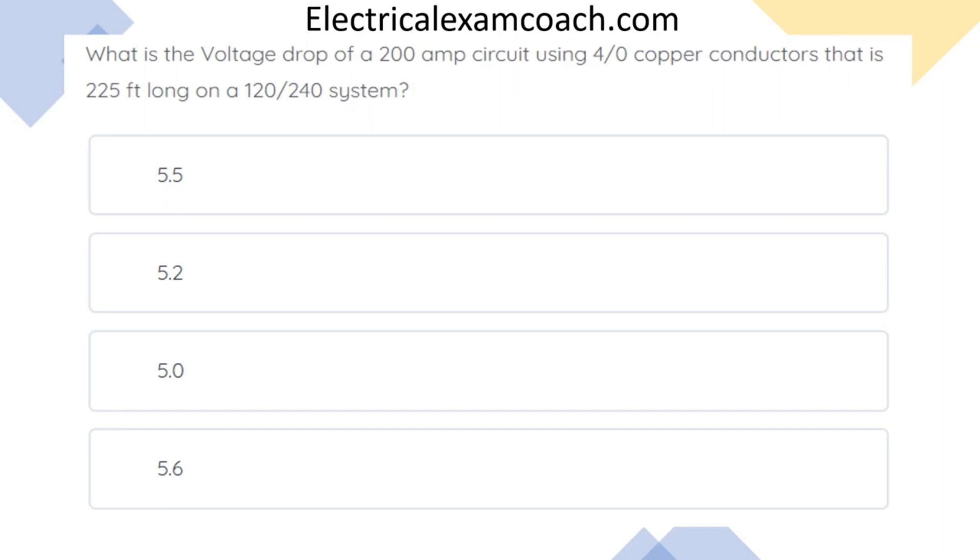What is the voltage drop of a 200-amp circuit using 4-aught copper conductors that is 225 feet long on a 120-240-volt system?